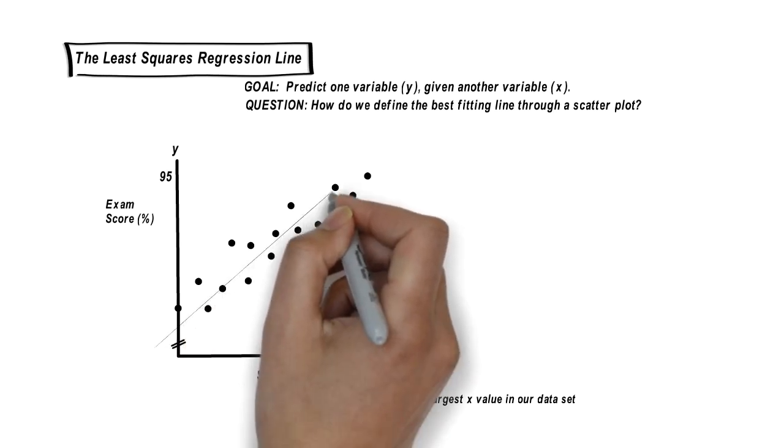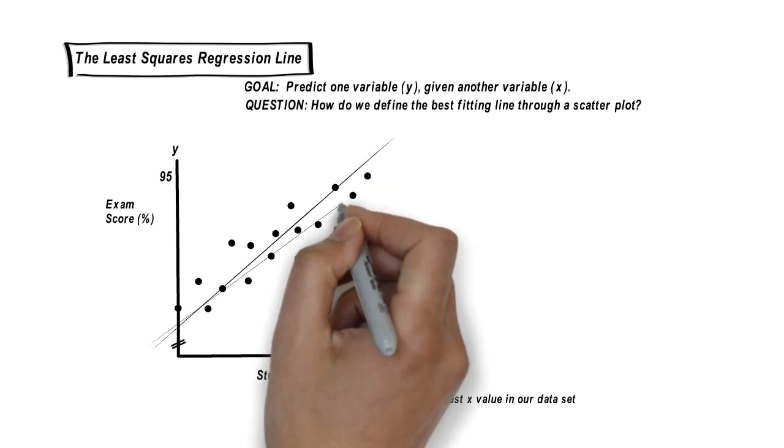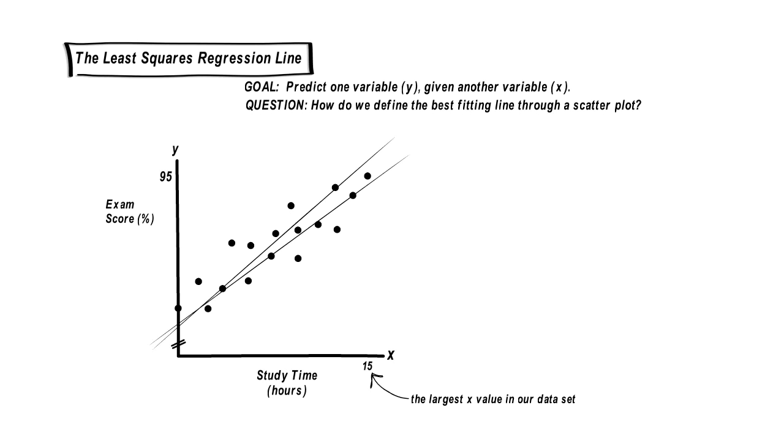I might draw this line, but you might draw this one. Or another person might decide this is the best line. We need to come up with a rigorous mathematical definition of what we consider the best line.